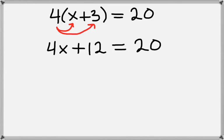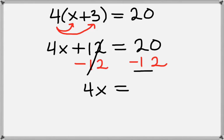Now, we want to get the 4x term by itself, so we'll subtract 12 from the left-hand side, and since we did that to the left-hand side, we've got to do it to the right-hand side. Then 12 and the minus 12 will cancel on the left-hand side, so that leaves us with 4x. On the right-hand side, we have 20 minus 12, which will leave us with 8.